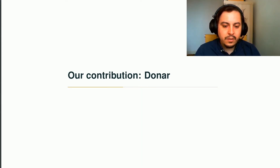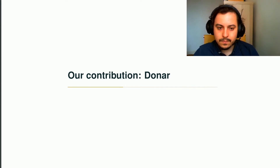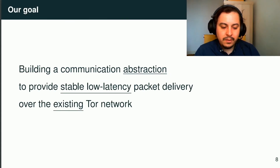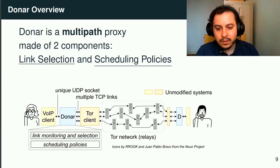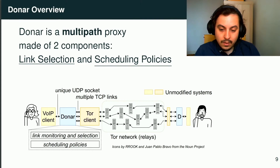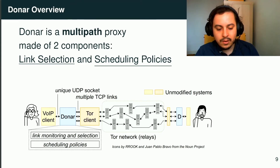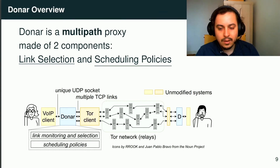Based on these observations, we designed a system that provides the required stability and interactivity for anonymous calls. Our goal is to build an abstraction over the existing Tor network that will deliver VoIP packets on time, with a huge emphasis on reusing existing software and infrastructure. In practice, our system is a proxy that sits between the VoIP client and the Tor client on the user side. The VoIP client sends UDP packets to Dona, which schedules them on multiple Tor links. Inside the proxy, we implemented our multipath logic in two components: link selection and scheduling policies.